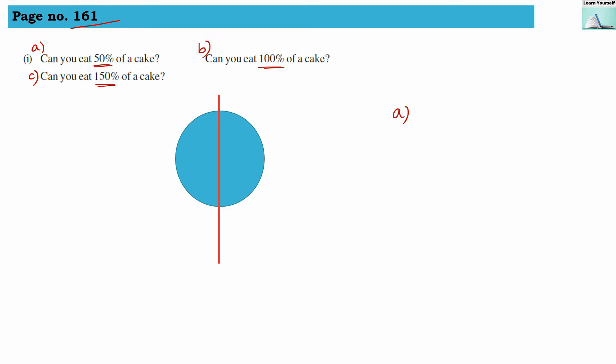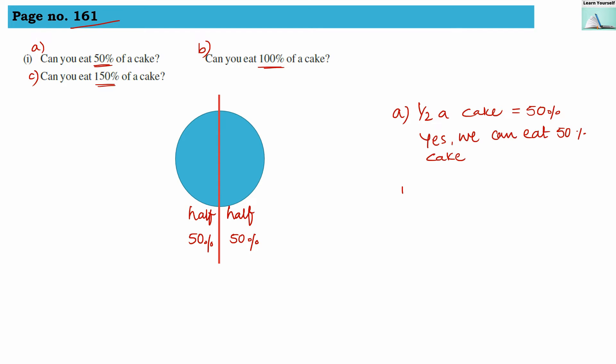If this is a full cake and we divide it into half, then we have two halves. This is 50% of the cake and this is also 50% of the cake. When you are eating half a cake, that means you are eating 50% of the cake. So yes, you can eat 50% of a cake.